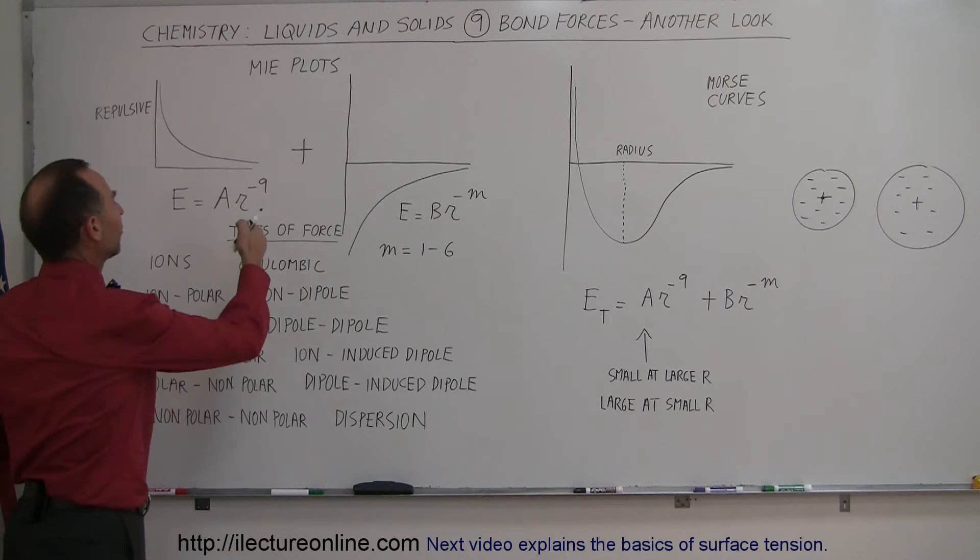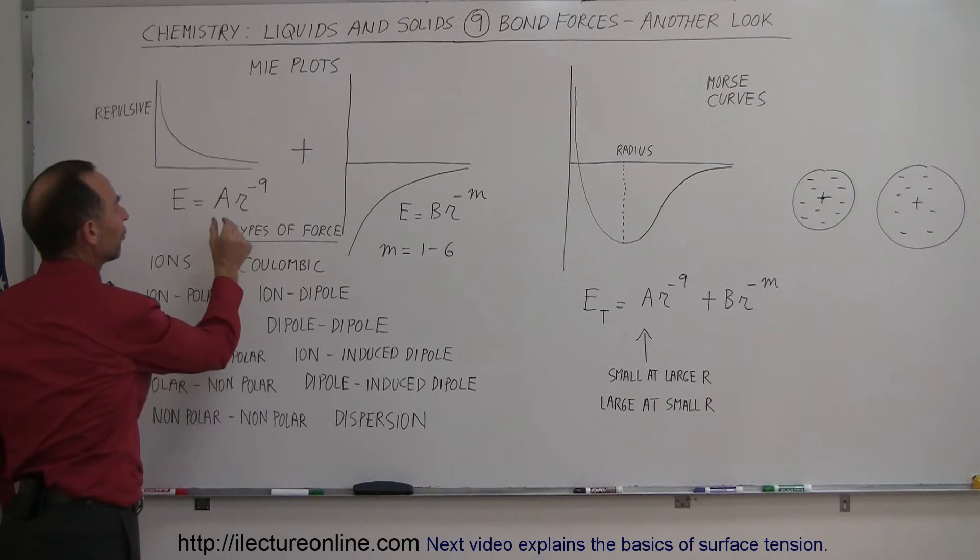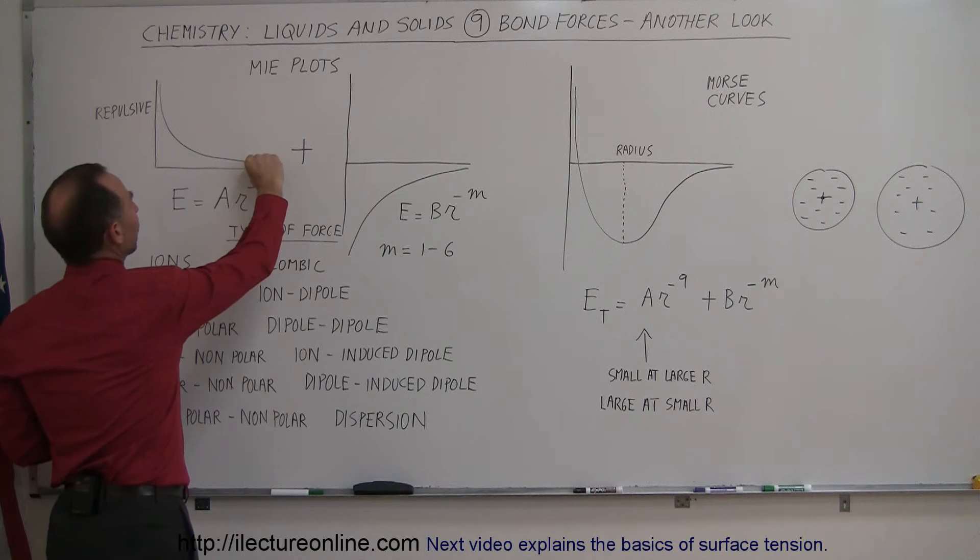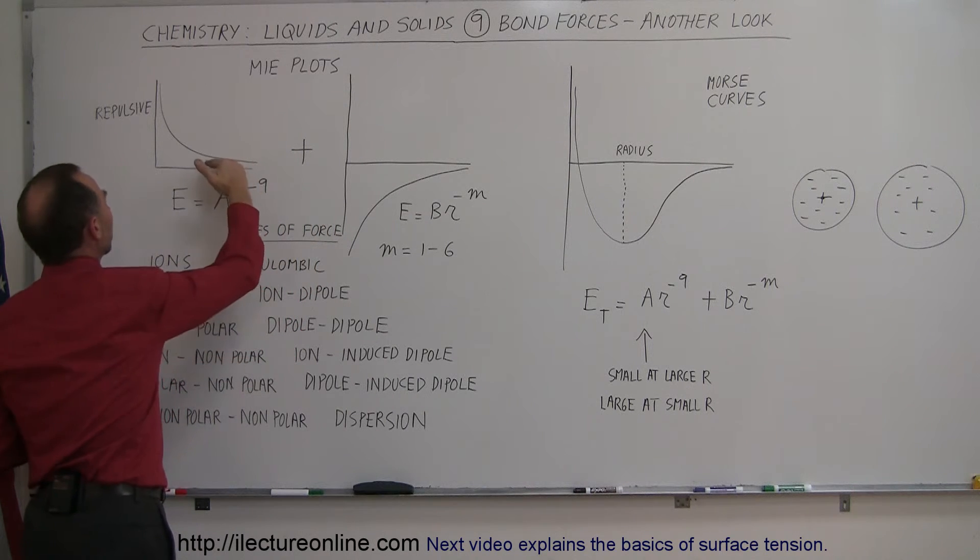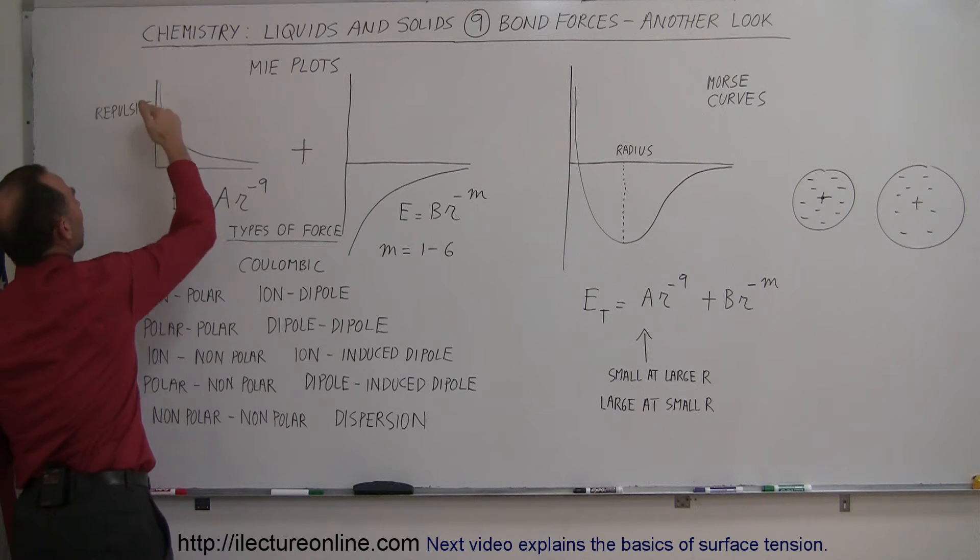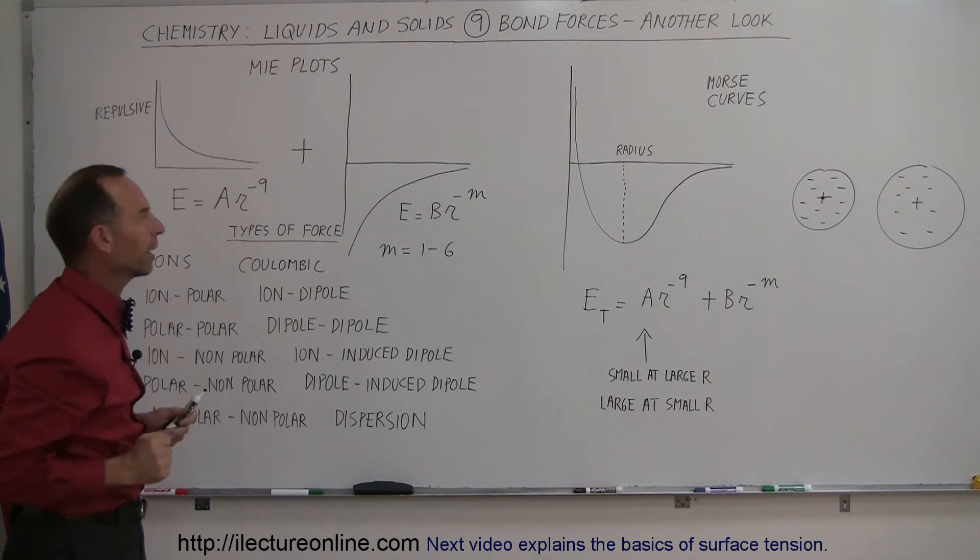Which means this is the same as 1 over r to the 9 power. So when r is very large, the repulsive forces are very, very small. But as r becomes smaller, the repulsive forces increase very, very quickly, and become enormously large as you bring the two nuclei close together.